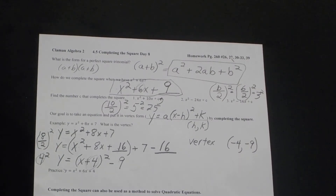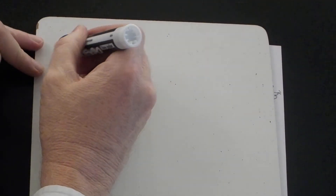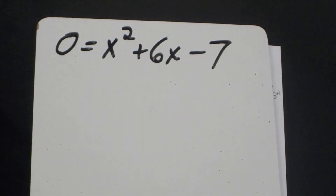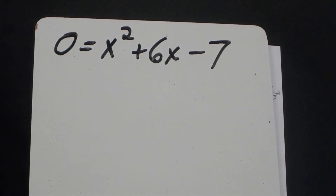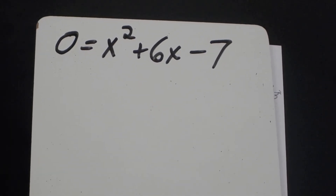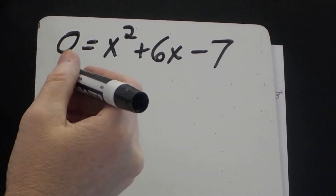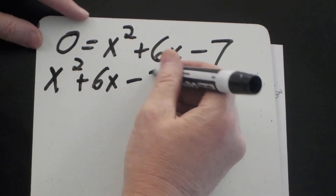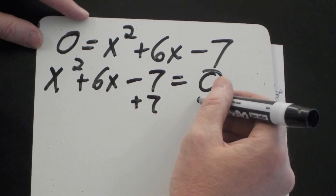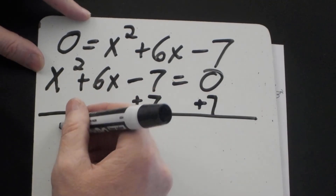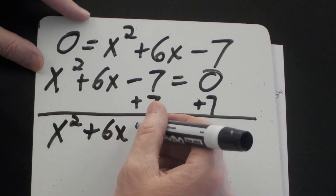We want to solve 0 equals x squared plus 6x minus 7 by completing the square. I'll rewrite it as x squared plus 6x minus 7 equals 0. The first thing I'm going to do is add 7 to both sides, giving me x squared plus 6x plus something equals 7.